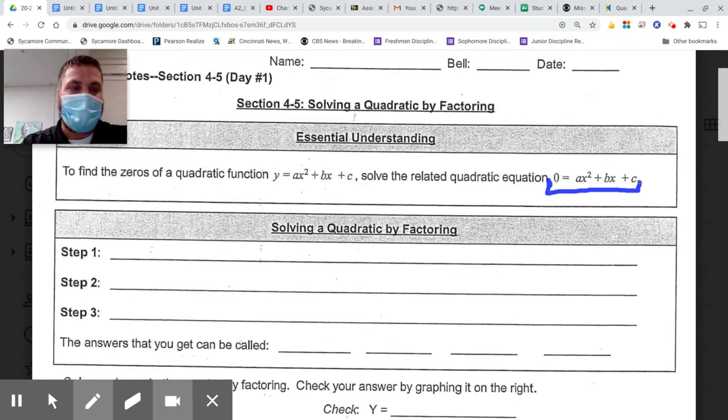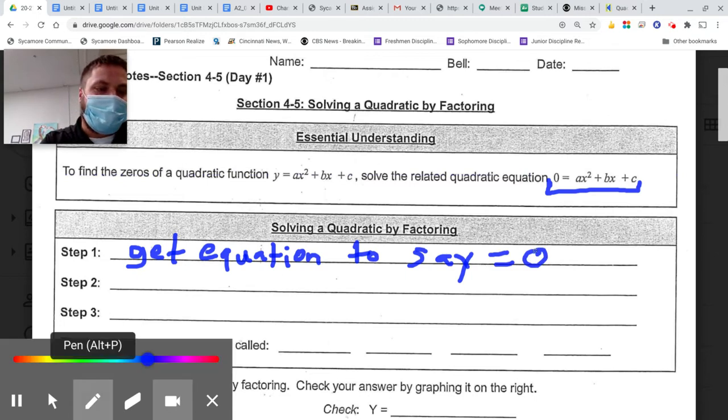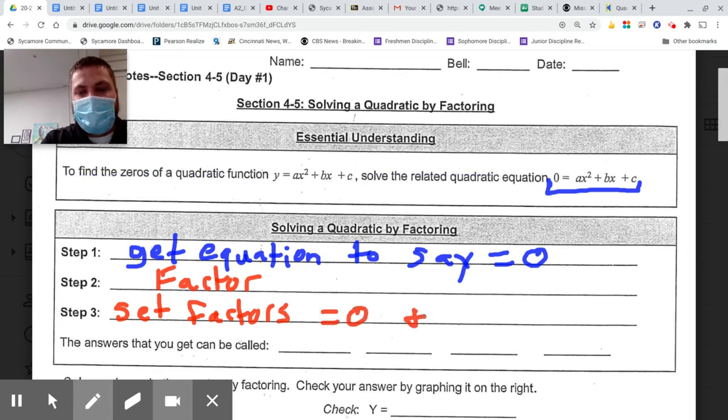There's going to be three steps when solving. The first is to get the equation to say equals zero before you start. Then step two is going to be factor. And then step three is going to be to set your factors equal to zero and solve for x.